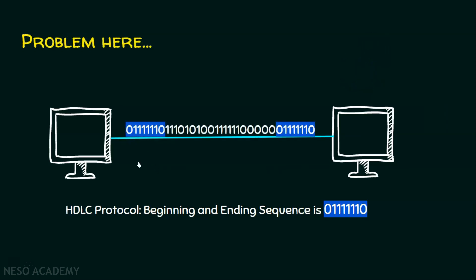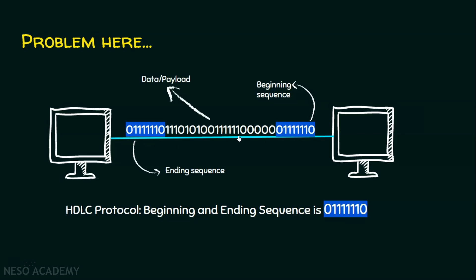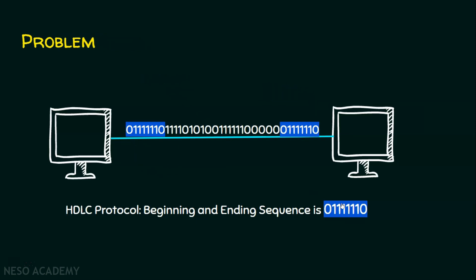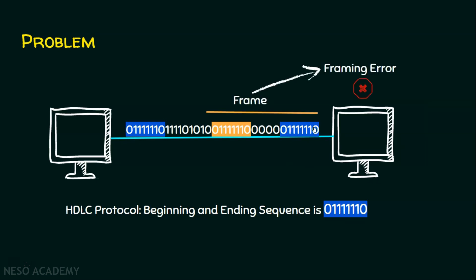Here is a scenario which has some problems. Suppose this is the sender and the sender is going to send some group of bits. This is the beginning sequence and this is the ending sequence, and this is the data part. The problem is: there is a bit pattern in the data which resembles the beginning sequence or the ending sequence. When the receiver receives this group of bits, it understands that this is the beginning of the frame and this is the end of the frame, and therefore this is the frame. And it leads to a framing error.